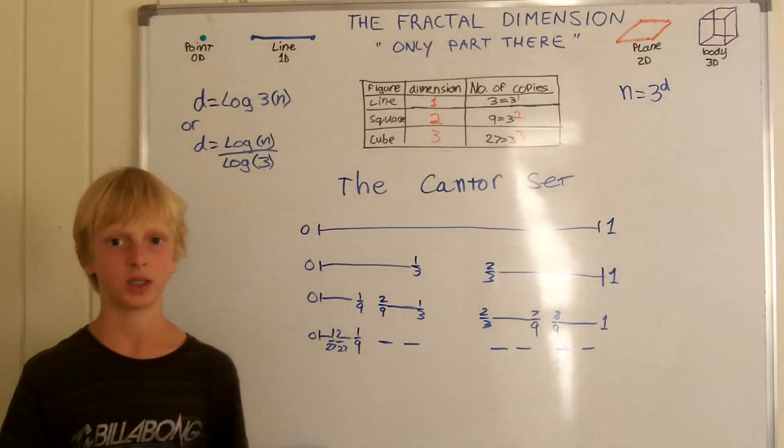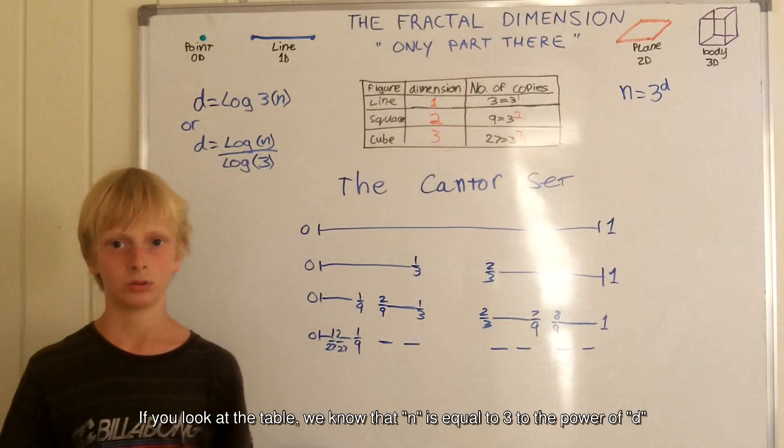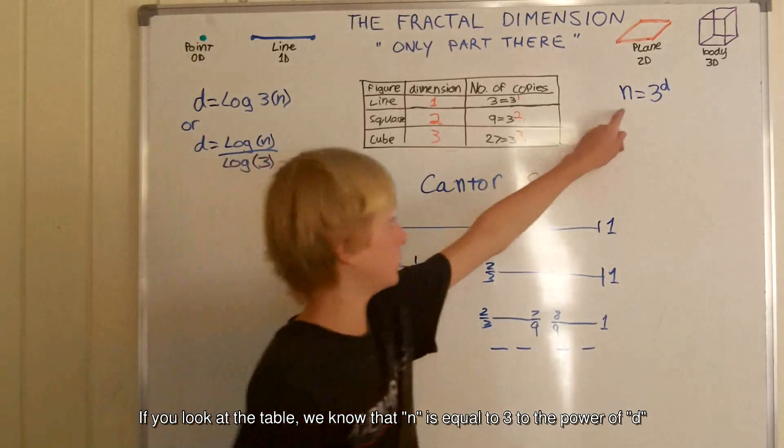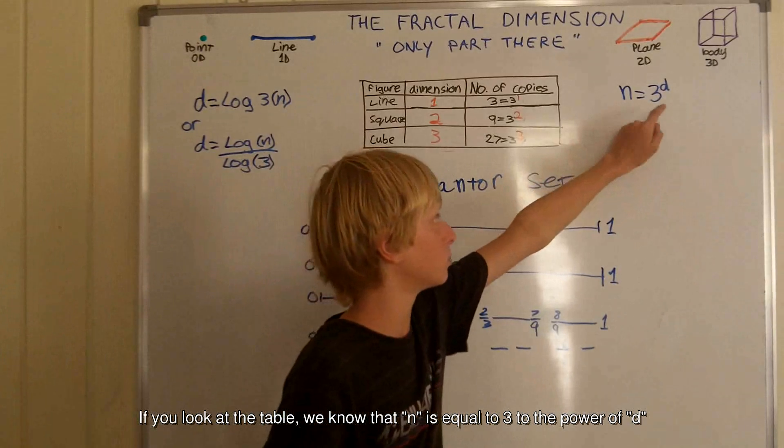How do we calculate this? If you look at the table, we know that n is equal to 3 to the power of d.